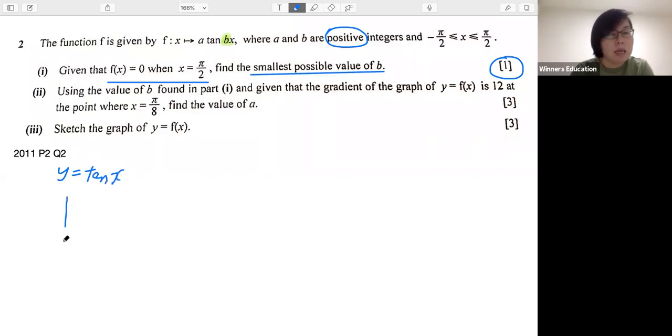I'll do a simple sketch of my tan(x) graph. Just a really quick one. So for tangent graph, we know that the period, which is π, 180 degrees, that is how long it takes to complete one cycle.